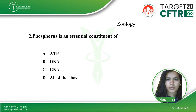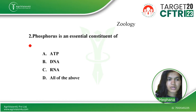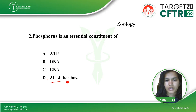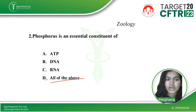The second question is from zoology: phosphorus is an essential constituent of — option A, ATP; option B, DNA; option C, RNA; and option D, all of the above. The right option is all of the above, since phosphorus is essential for ATP, DNA, as well as RNA.